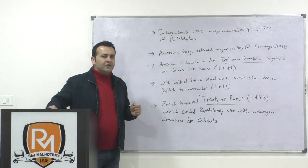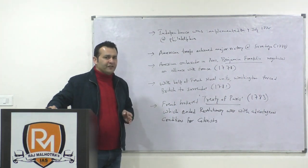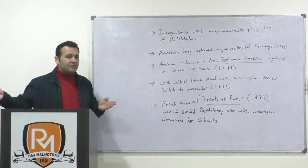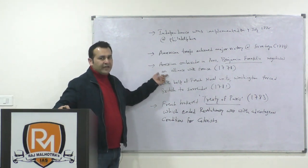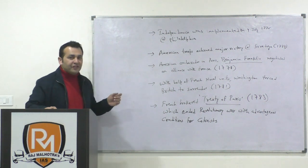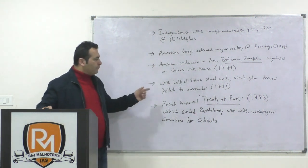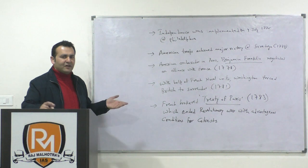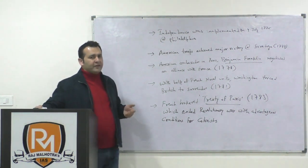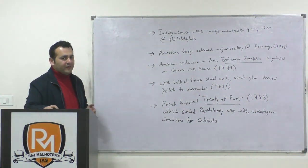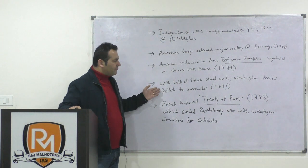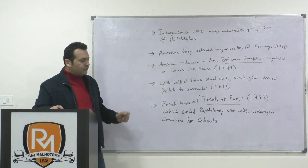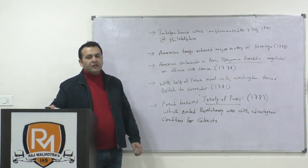France was obviously interested because recently, in the war that ended from 1756 to 1763, France had been liquidated from Canada and India — losing territories from their empire. So France was ready to enter into this war. Finally, with the help of French naval units, France brokered the Treaty of Paris, which ended that revolutionary war with advantageous conditions for the American colonies.